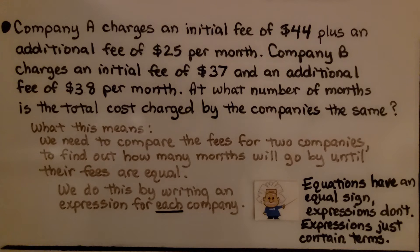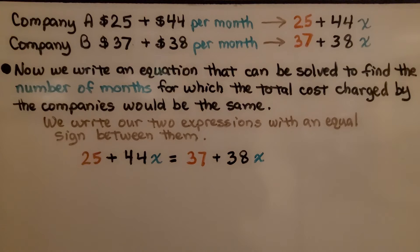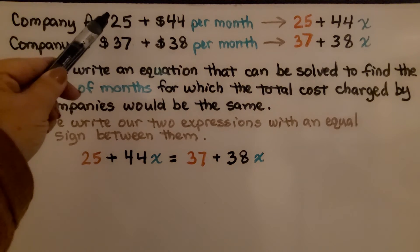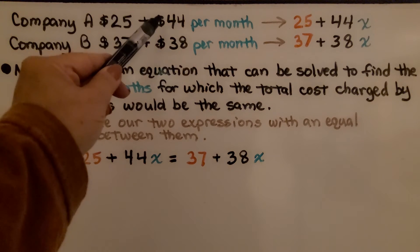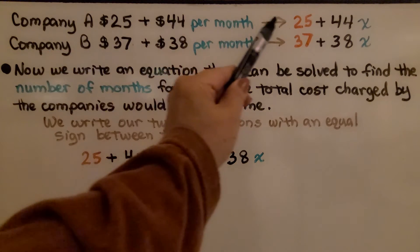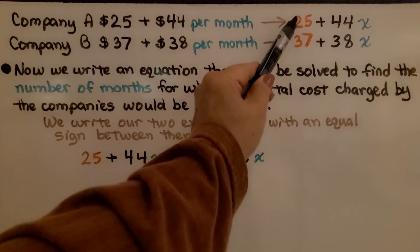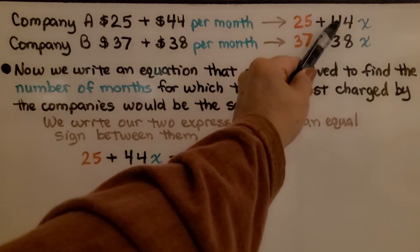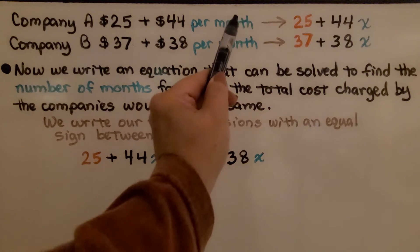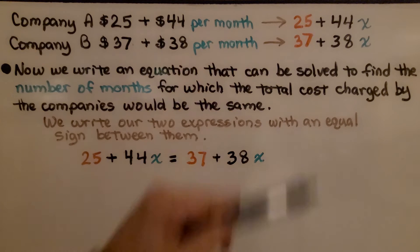We do this by writing an expression for each company. Remember, equations have an equal sign; expressions don't — expressions just contain terms. For Company A, we had $25 plus $44 per month, which gives us the expression 25 plus 44x, where x is going to be each month.